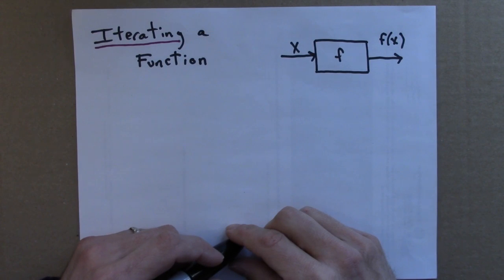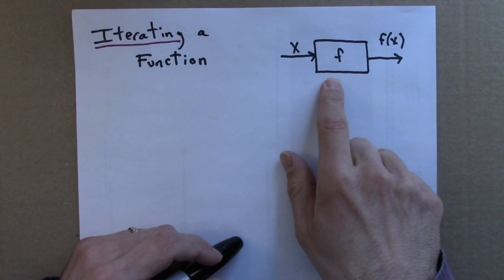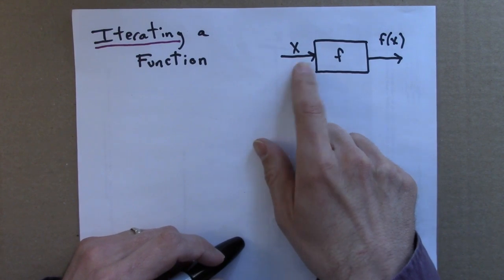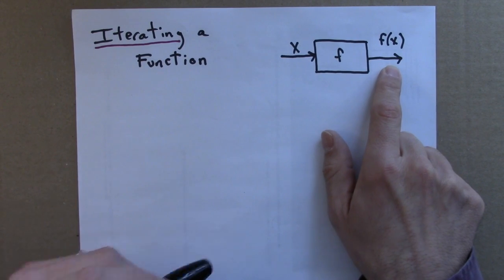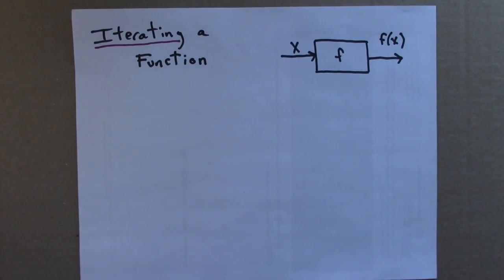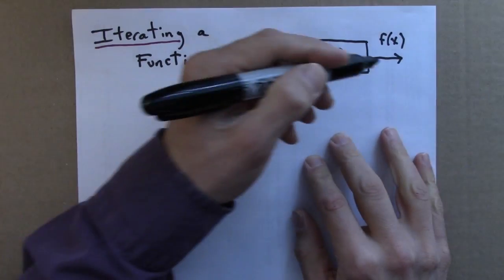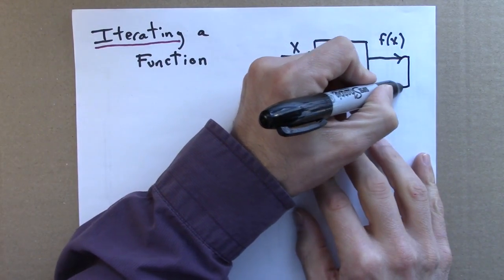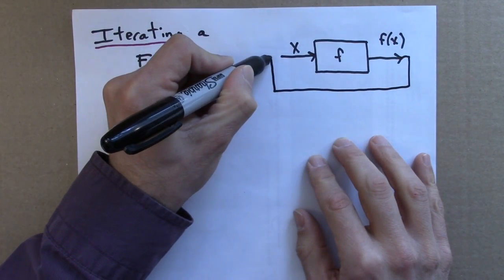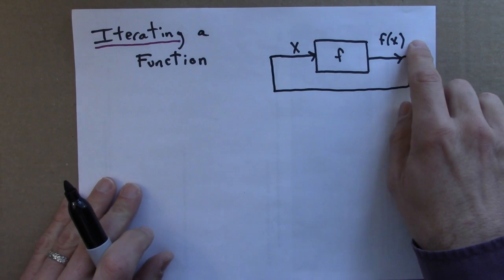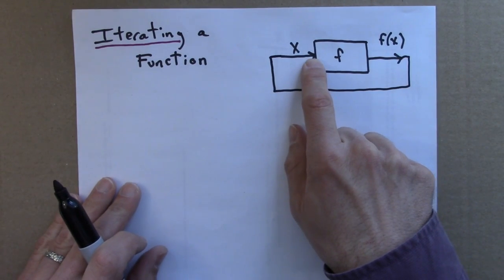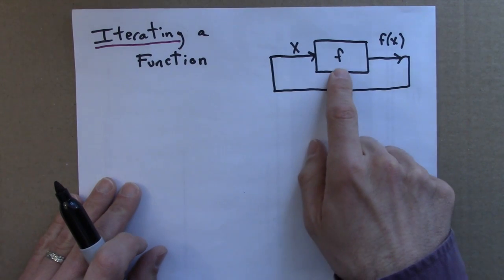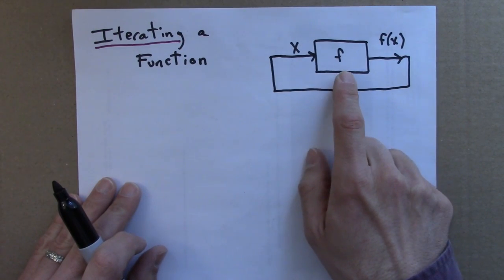So, here's the idea behind iteration. As we've seen, a function is an action. It takes an input x, it does something to it, the function acts on it, and there's an output called f. To iterate a function, we just turn this process into a loop, like this. I take the output of a function and feed it back in as the input. So I'm repeatedly applying this function over and over to a number.